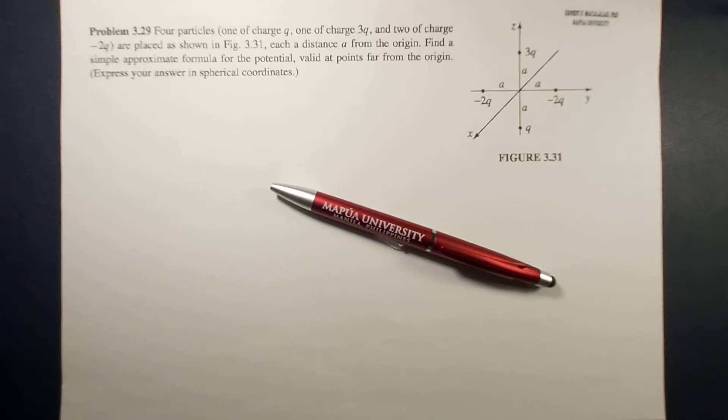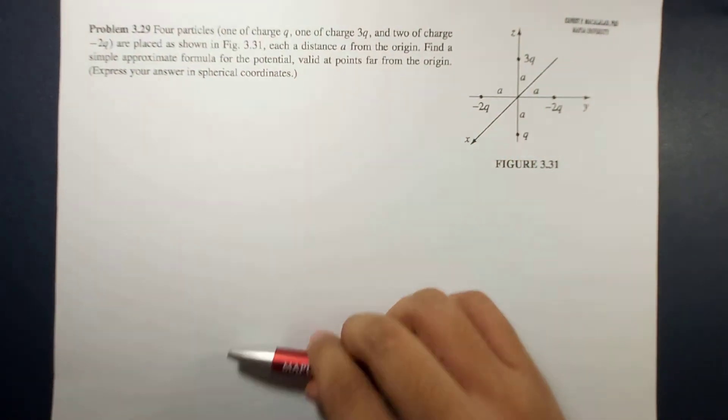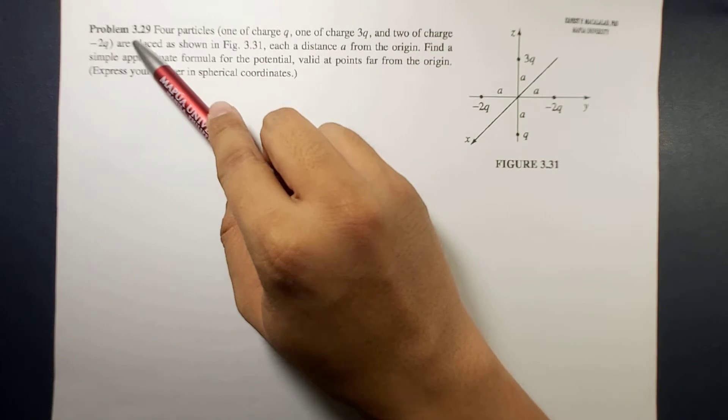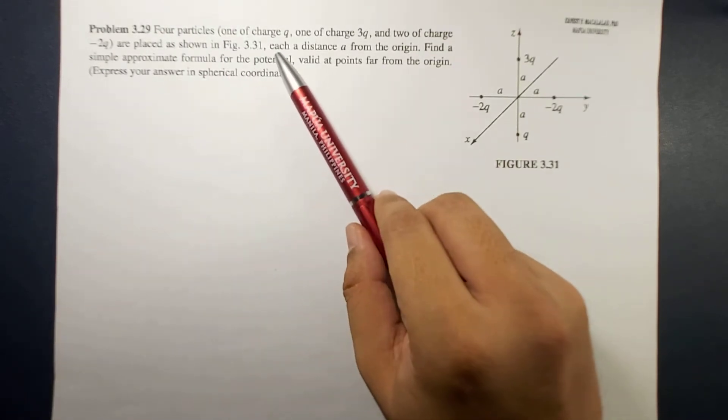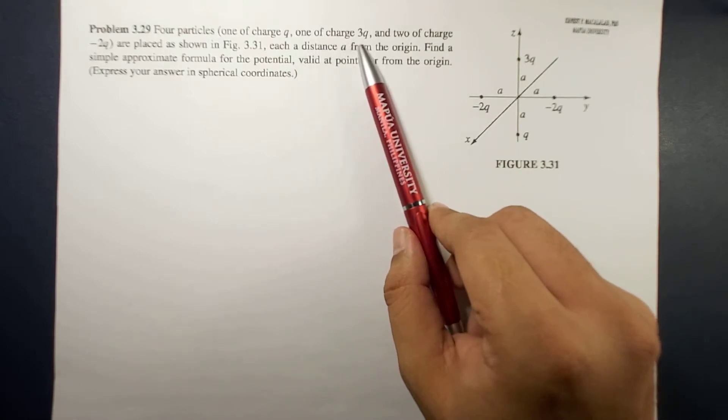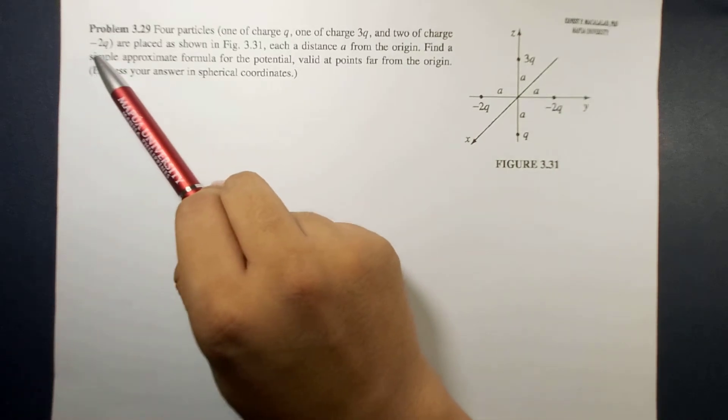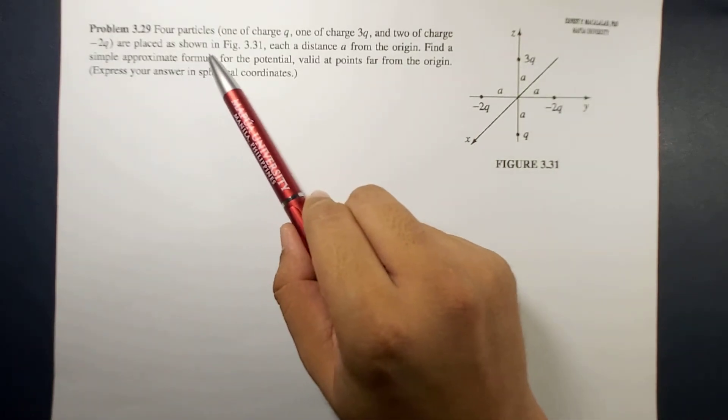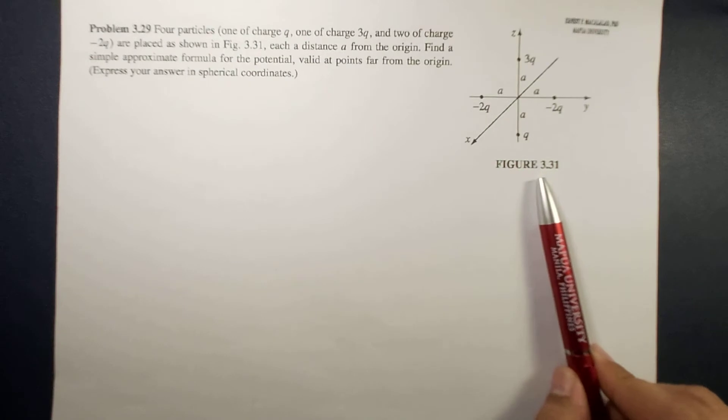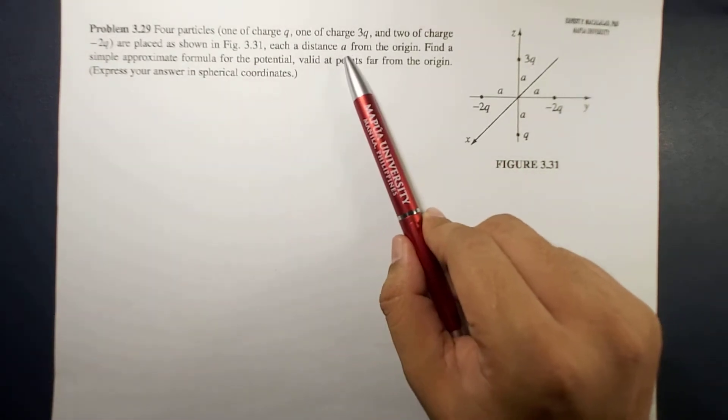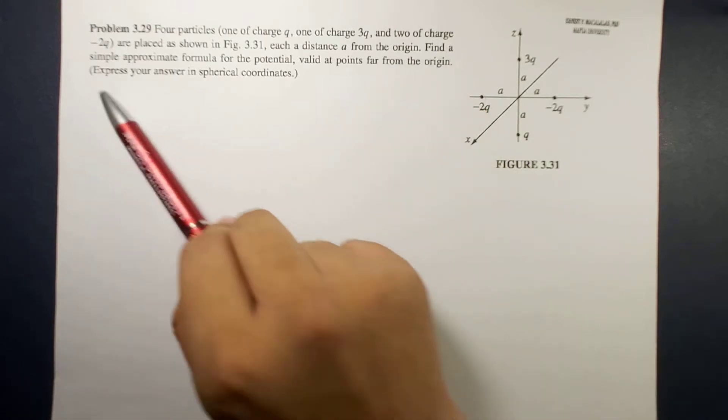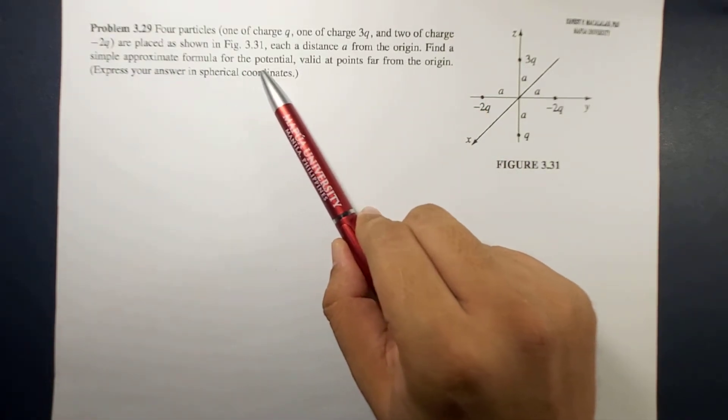Hello guys, what's up, this is me Sir Ernest and today we will have an example related to multipole expansion. The problem reads: four particles, one charge q, one charge 3q, and two of charge negative 2q are placed as shown in the figure, each a distance a from the origin. Find a simple approximate formula for the potential valid at points far from the origin.